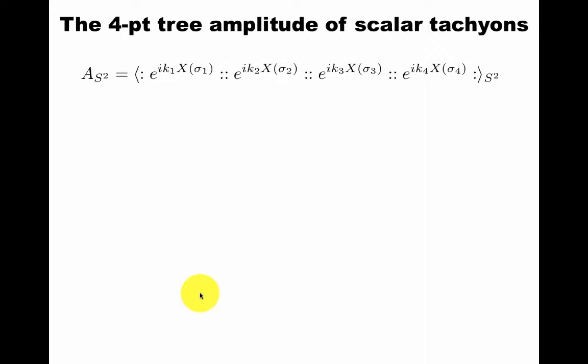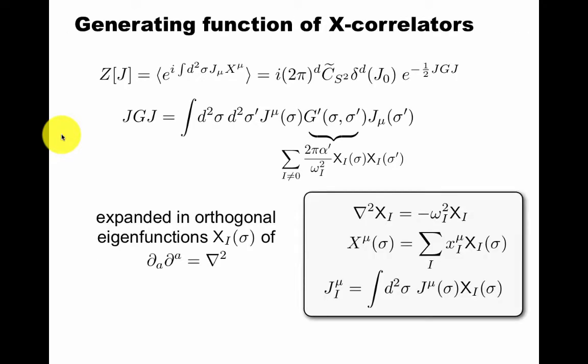For a 4-point function, it would depend on one complex parameter left over after having fixed the first 3. So let's take the simplest example, the 4-point amplitude of scalar tachyons on the sphere. These are closed-string vertex operators inserted at 4 different points. We already have the generating function for X correlators, and we find that you can express in terms of the exponential of the source times the Green's function times the source.